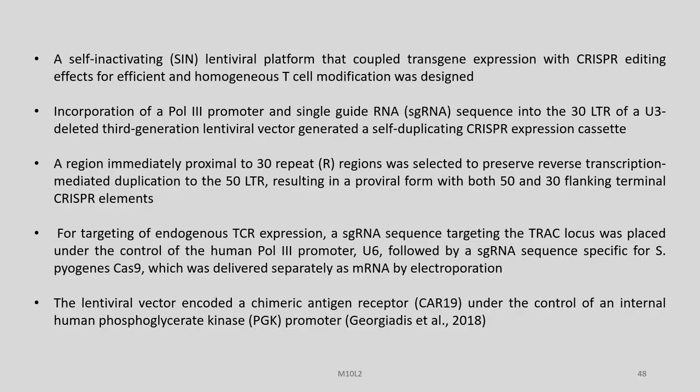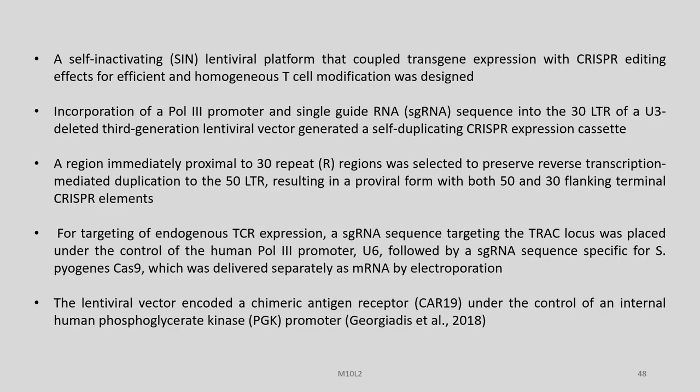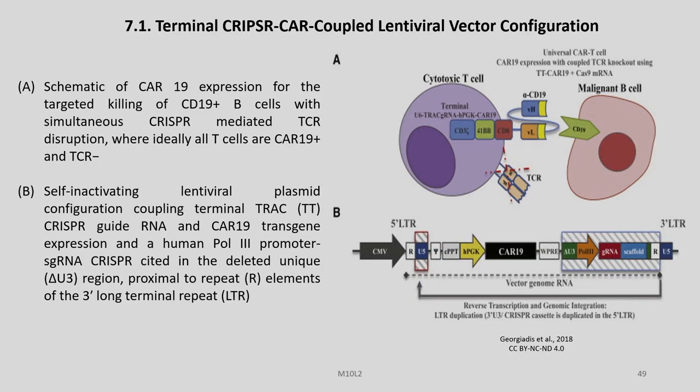A region immediately proximal to 3-prime repeat regions was selected to preserve reverse-transcription-mediated duplication to the 5-prime LTR, resulting in a proviral form with both 5-prime and 3-prime flanking terminal CRISPR elements. For targeting of endogenous TCR expression, the sgRNA sequence targeting the TRAC locus was placed under the control of the human pol III promoter U6, followed by an sgRNA sequence specific for S. pyogenes Cas9, which was delivered separately as mRNA by electroporation. The lentiviral vector encoded the chimeric antigen receptor under the control of an internal human phosphoglycerate kinase promoter.